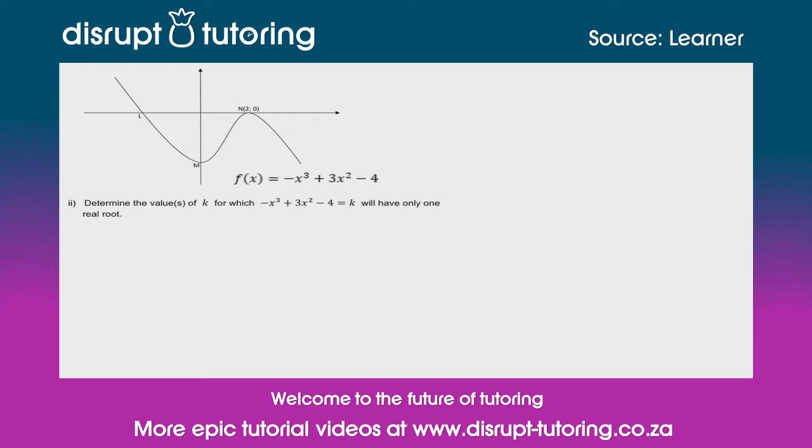Now when I first looked at this, I mistakenly didn't look at the mark allocation and I thought okay, I need to try and use the discriminant. Then I realized it's a cubic function and we're not necessarily taught in matric how to use a discriminant to solve for values of k that would only give you one real root. I did a quick Google search on how you would solve the discriminant for a cubic function and it was terrifying. So I decided that there must be a simpler way.